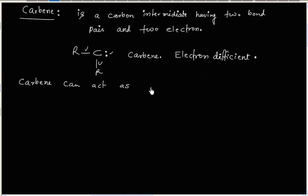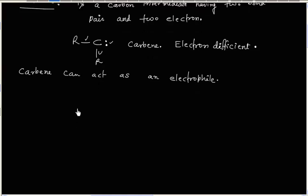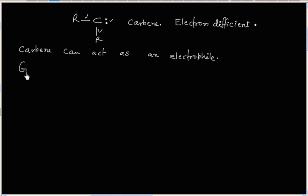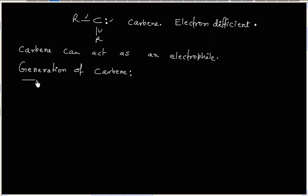Carbene can act as an electrophile. Now, let us discuss about the generation of carbene. One way to generate carbene is to heat diazomethane.